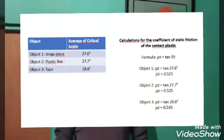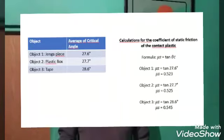Finally we calculate the coefficient of static friction of the surfaces. To calculate this we just calculate the tangent of the critical angle. So in object 1 the coefficient of static friction was 0.523.